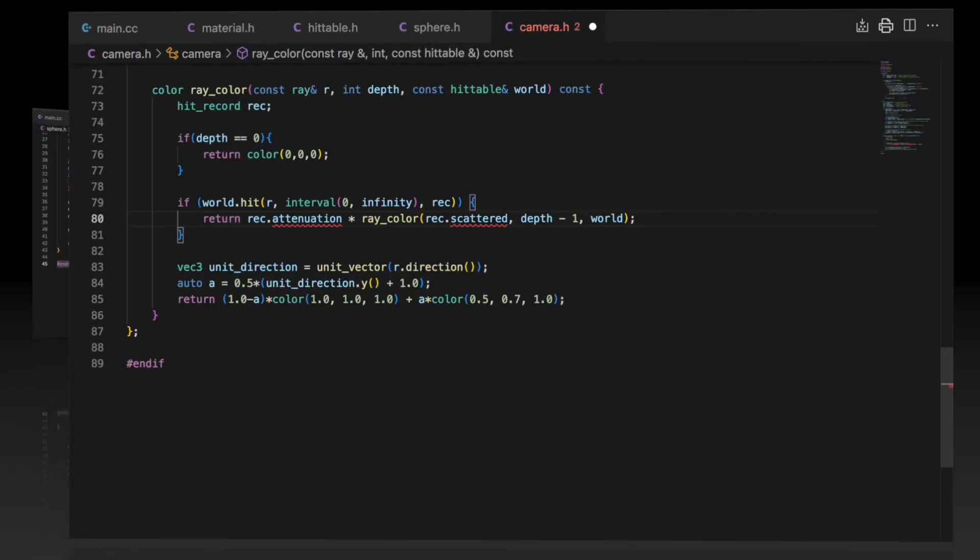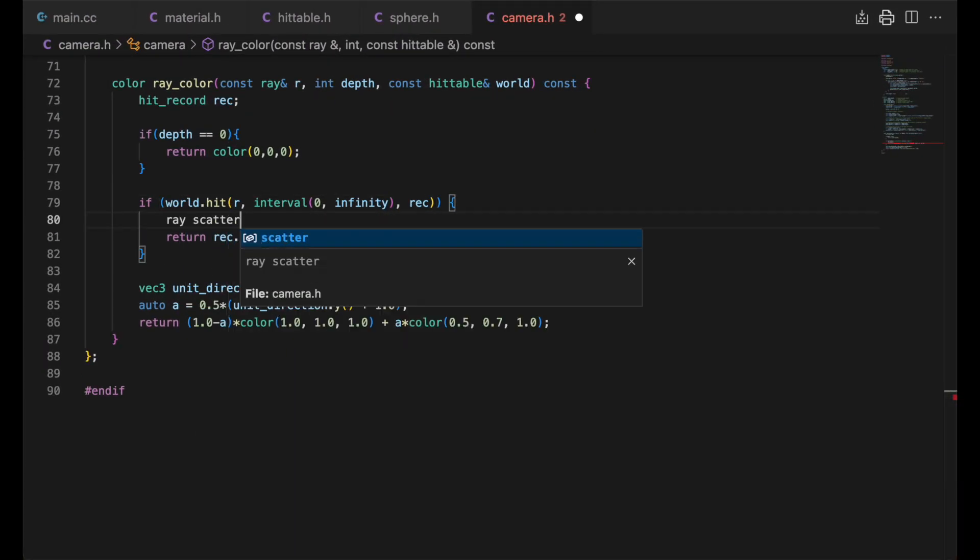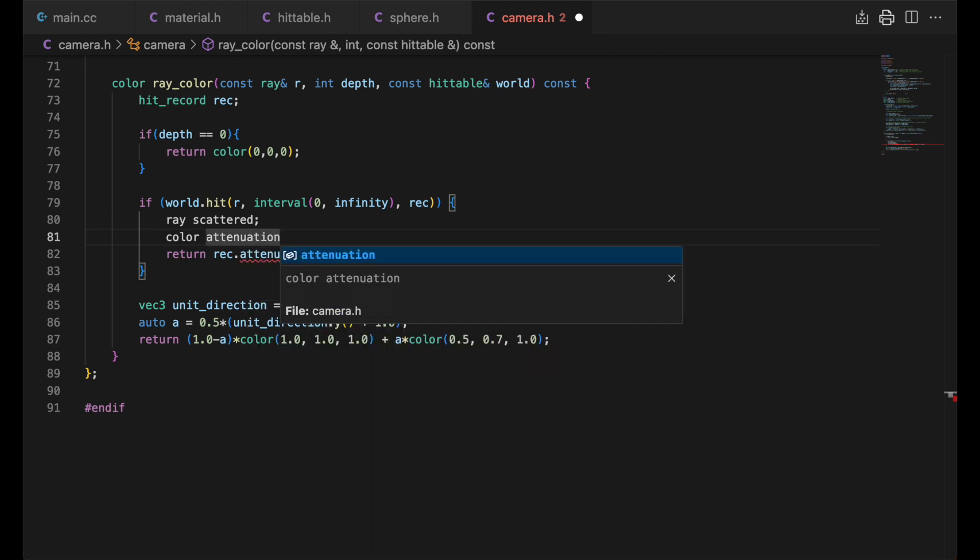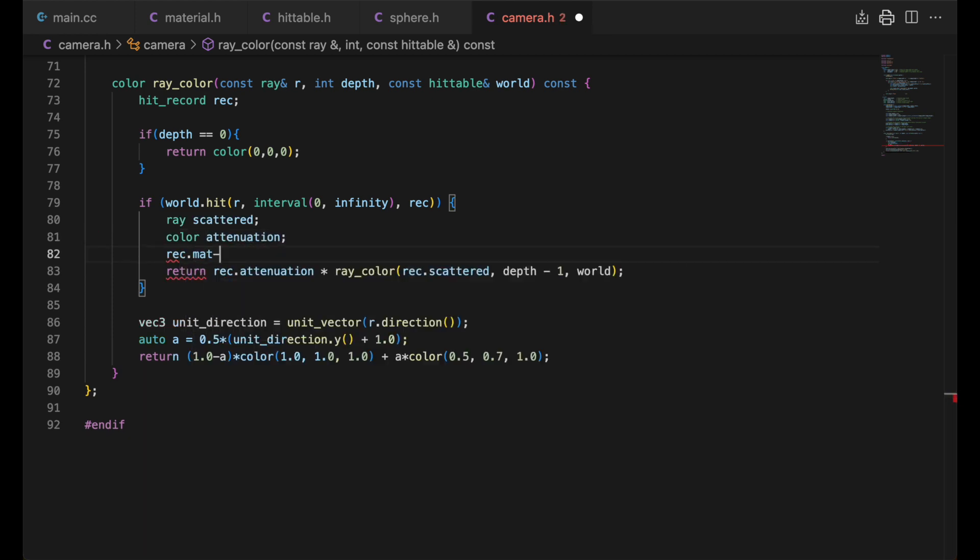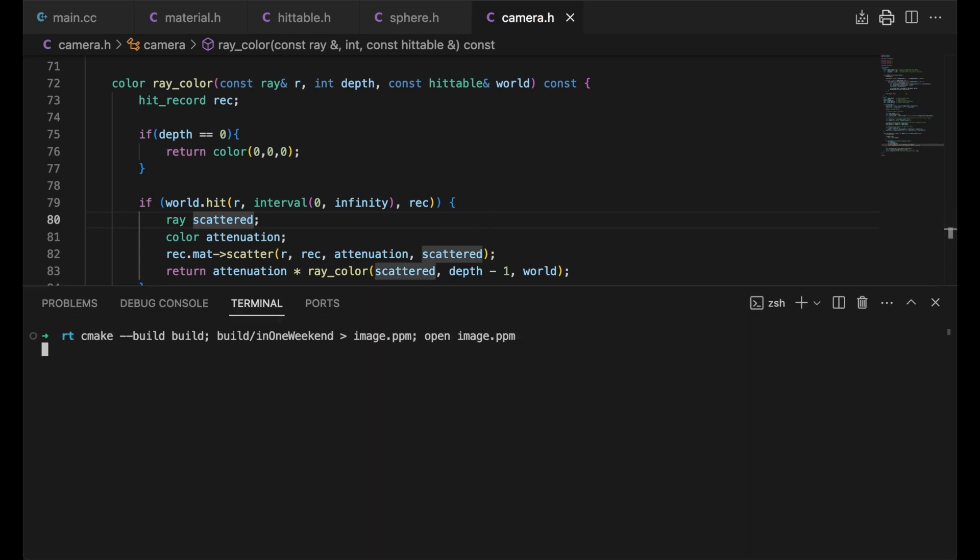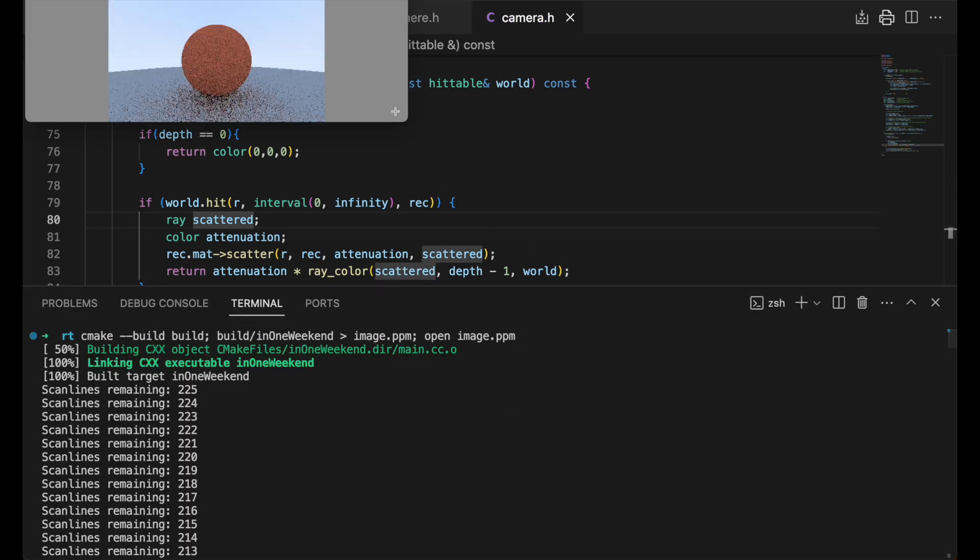Note we forward declare the material class here. And here's where the rubber hits the road. If there's a hit, we'll create the two variables we're going to use, and pass them in as output parameters to the material's scatter method, along with the incident ray and the hit record. Generating our image, things look as expected.